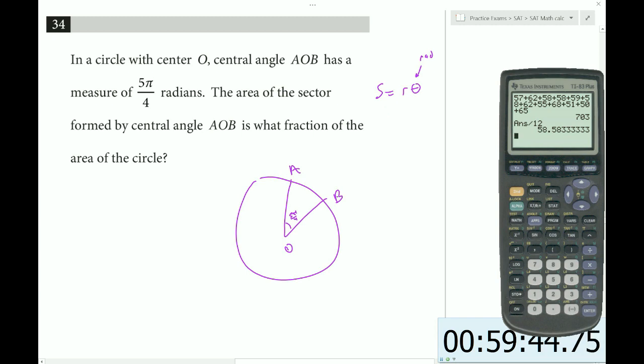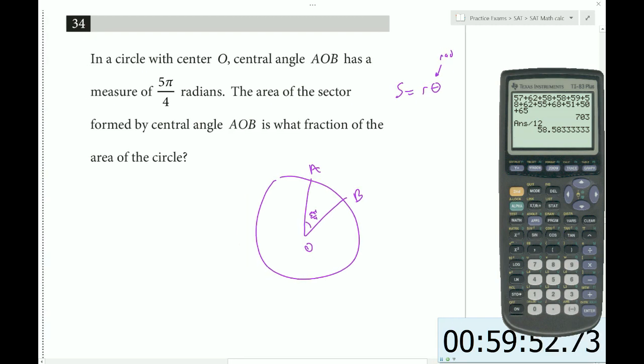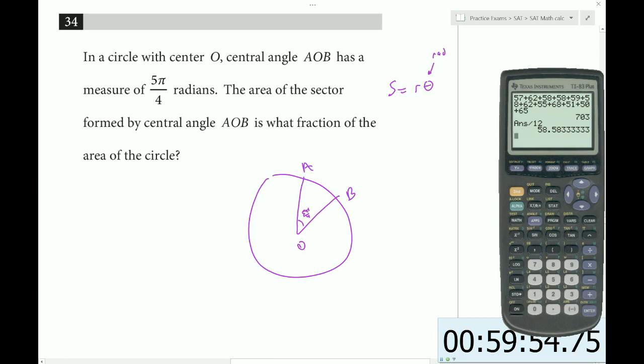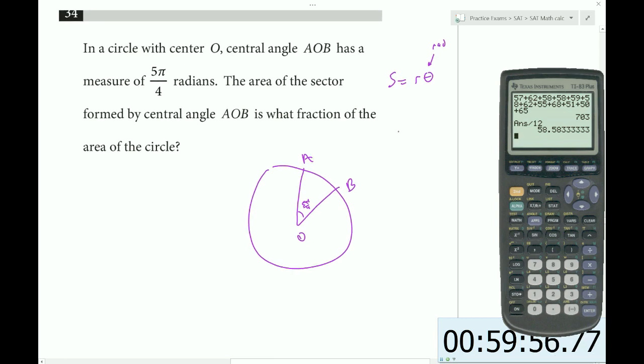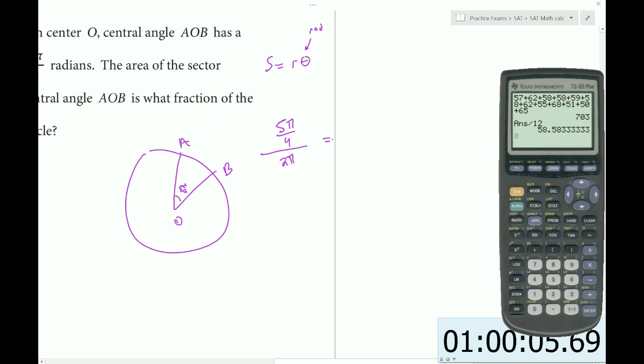Do we know the radius? I don't think so. All we know is the angle. So what we can do is say 5 pi over 4 is our angle, out of a total of 2 pi. That gives us the fraction of the circle. We divide by 1 and multiply by the reciprocal. The pi's cancel, we get 5 over 8.